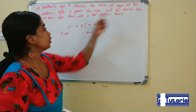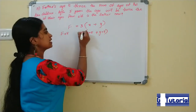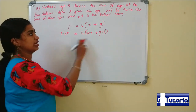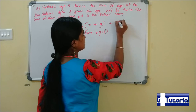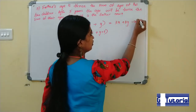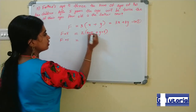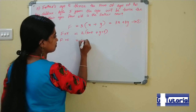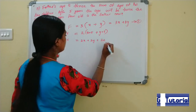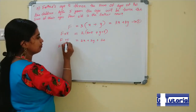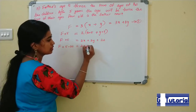After 5 years, the father's age will be twice the sum of the ages. So, f = 3x + 3y — that is Equation 1. And f + 5 equals 2(x + y + 5 + 5), which gives 2x + 2y + 10 = 20. Taking terms to one side: f + 5 − 20 is equal to 2x + 2y.